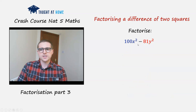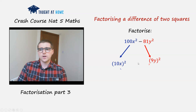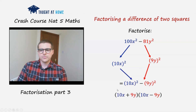Similarly, with this one, we've got 100x squared minus 81y squared. It's a difference of two squares because 100 is 10 squared, x is x squared, 81 is 9 squared, and y is y squared. So we can factorise this as (10x) squared minus (9y) squared, which written out fully is (10x + 9y) times (10x - 9y).